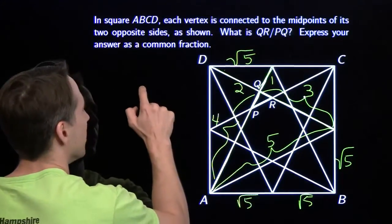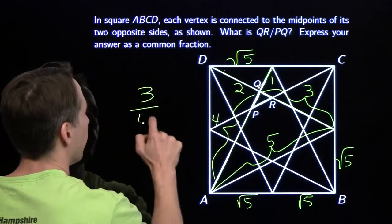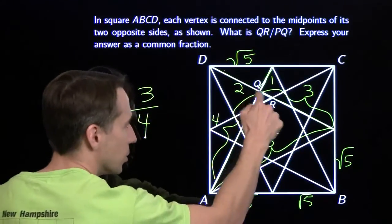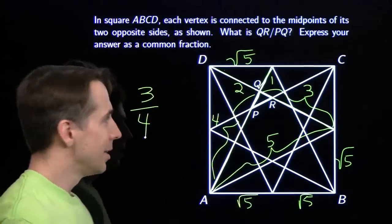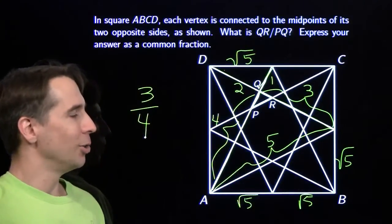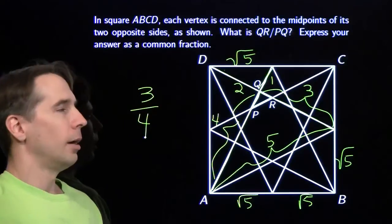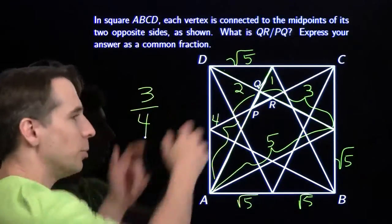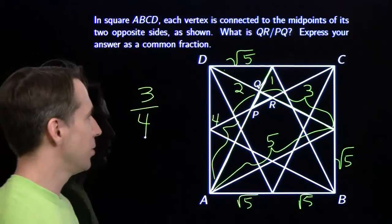Our answer is 3 over 4, because this over this equals QR over QP. So that's pretty slick. Harvey says he has something better — alright Harvey, enlighten us. What do you see when you look at this?